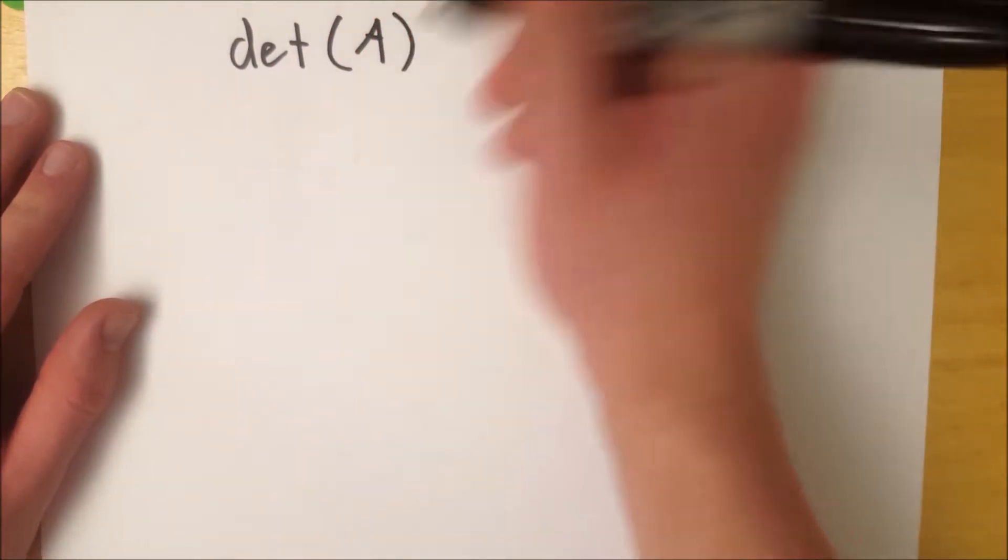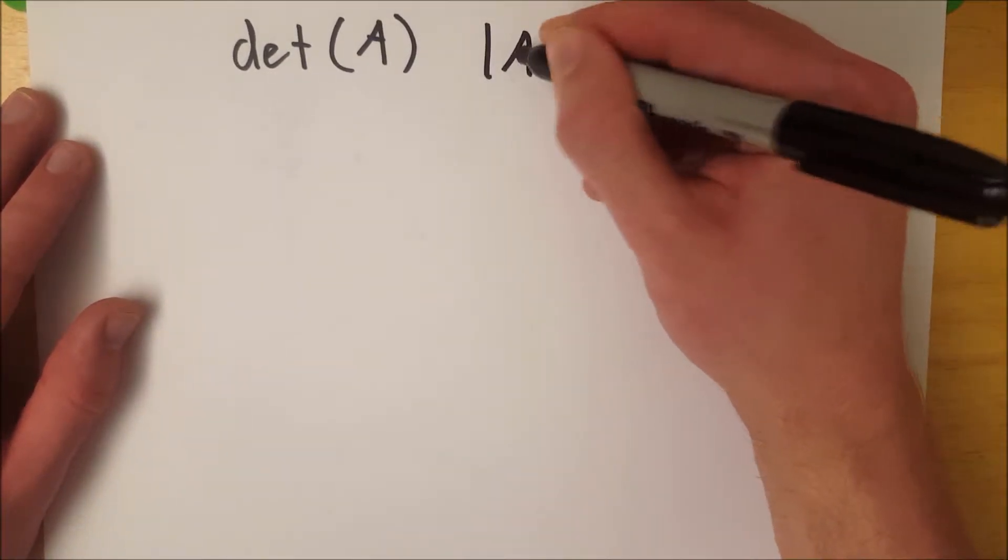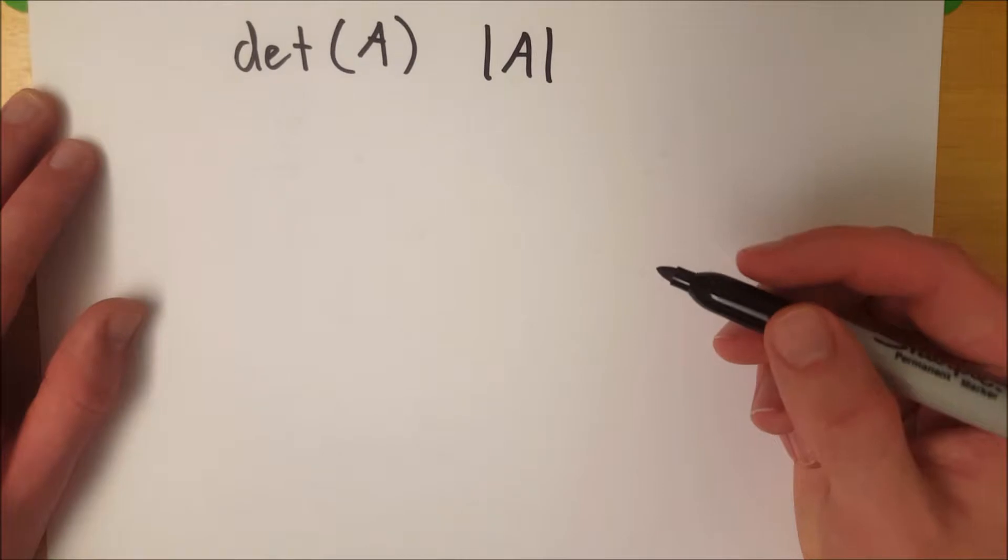You can write it like this, the determinant of matrix A, or you could write it like this, bars around the A, that's the determinant of A.